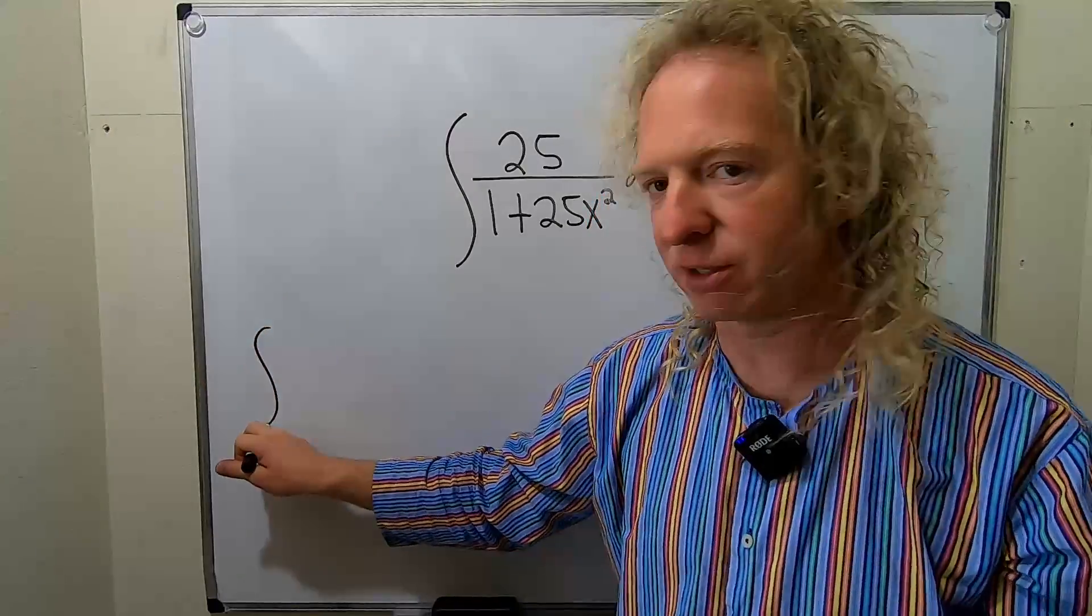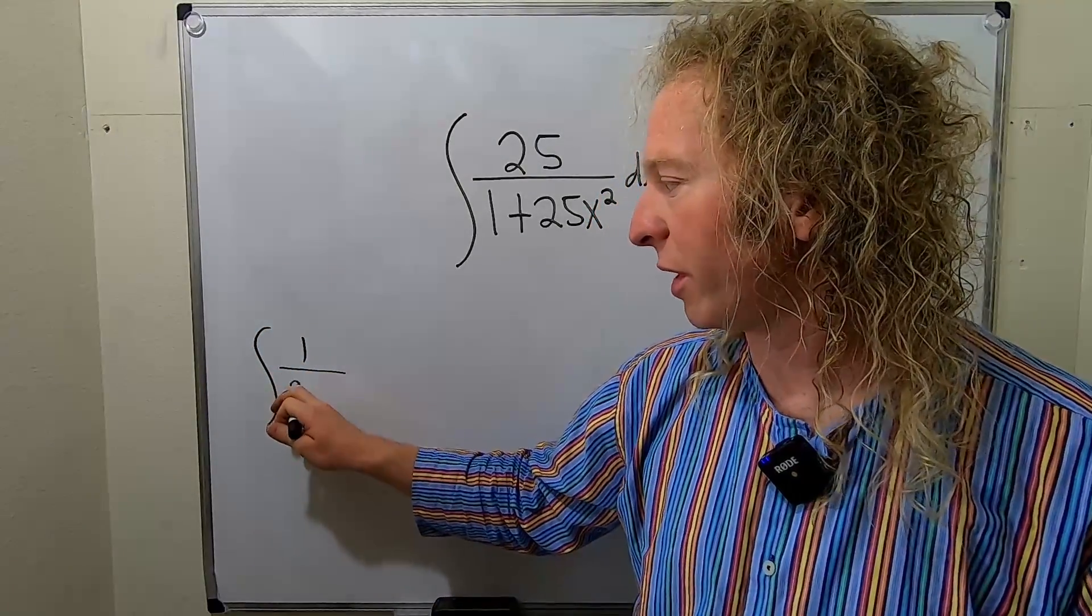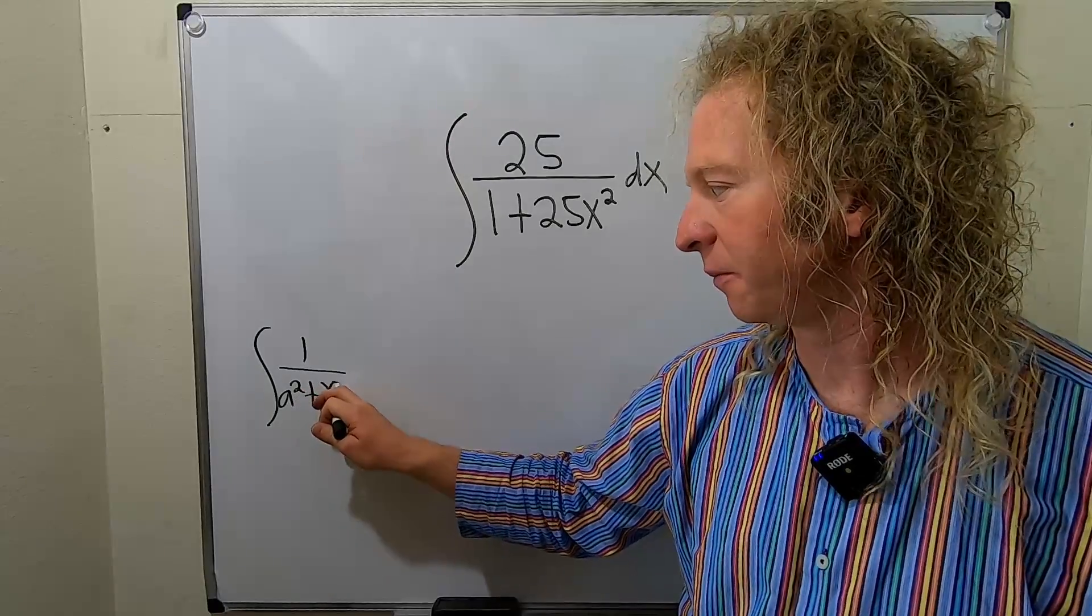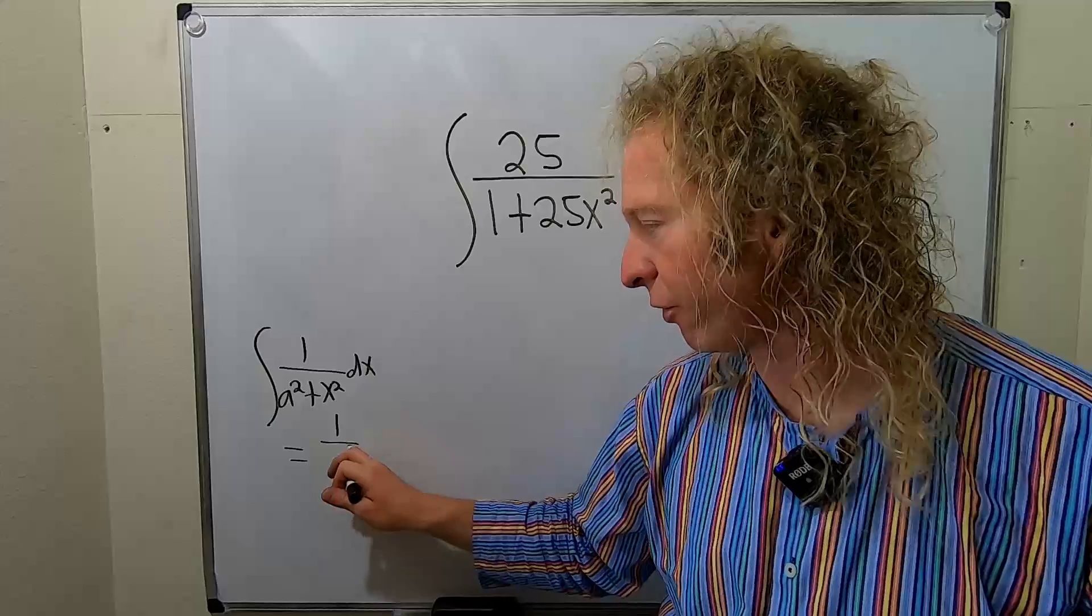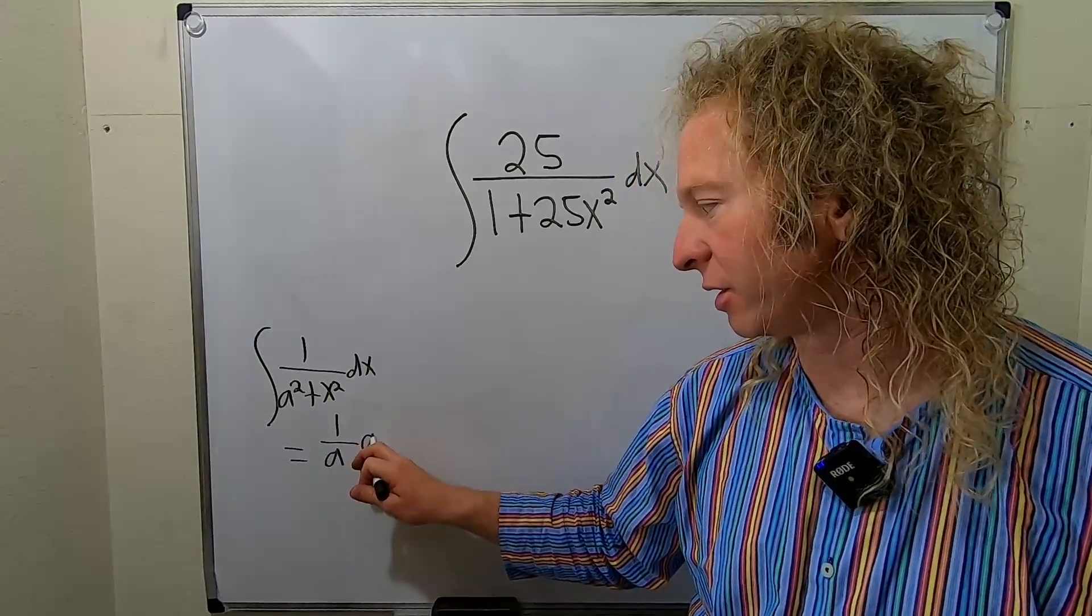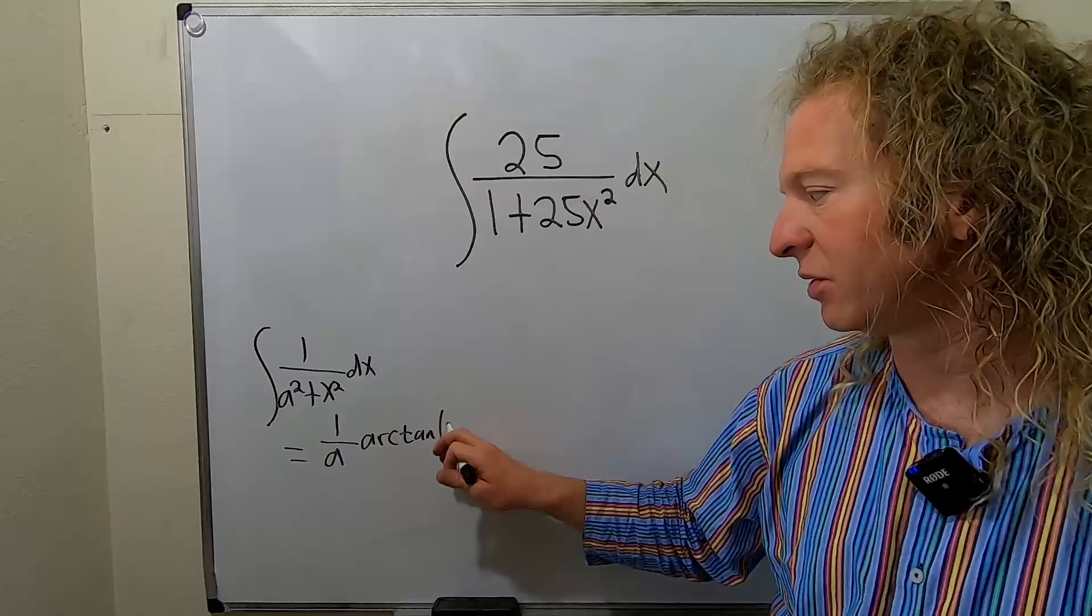Because the formula for arctangent is the following. If you have 1 over a squared plus x squared with respect to x, this is equal to 1 over a, arctangent of x over a plus c.